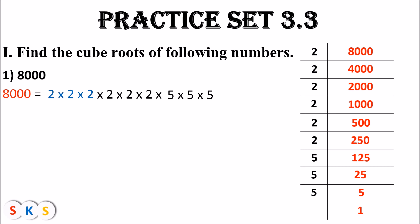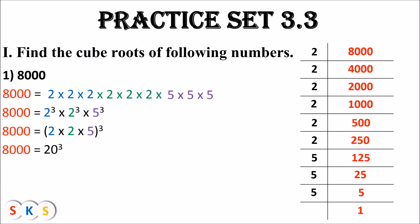Now we make groups of three same numbers. We have 2 × 2 × 2 as one pair, another 2 × 2 × 2 as the next pair, and 5 × 5 × 5 as the third pair. Therefore 8000 equals 2 raised to 3 into 2 raised to 3 into 5 raised to 3. Since the index of each factor is 3, we can write this as (2 × 2 × 5) whole raised to 3, which equals 20 raised to 3. Therefore the cube root of 8000 equals 20.